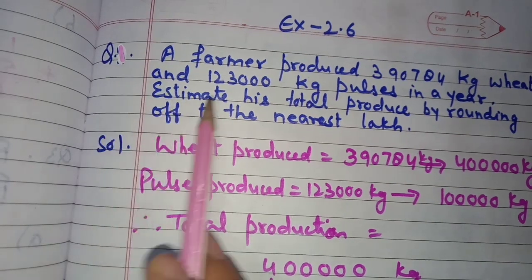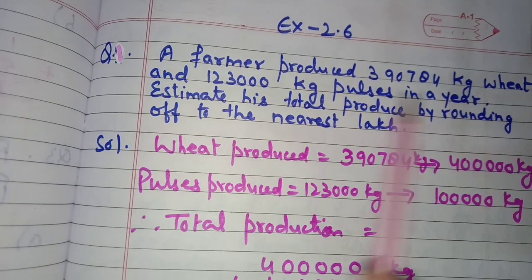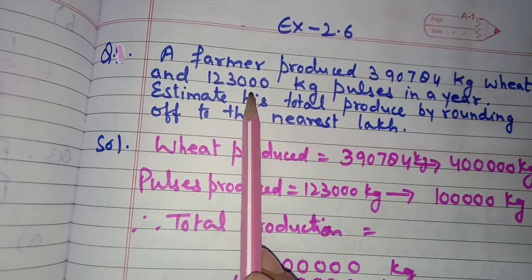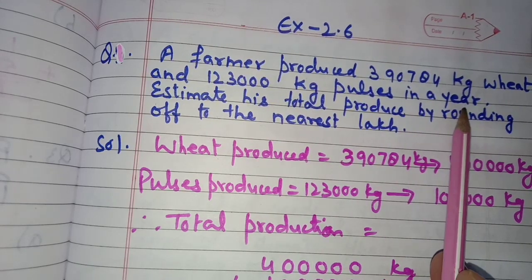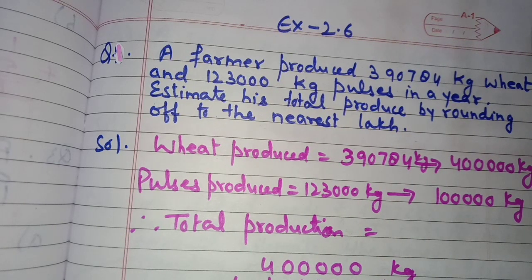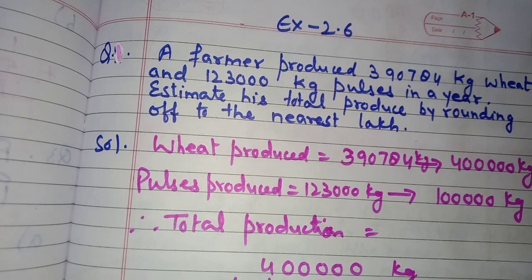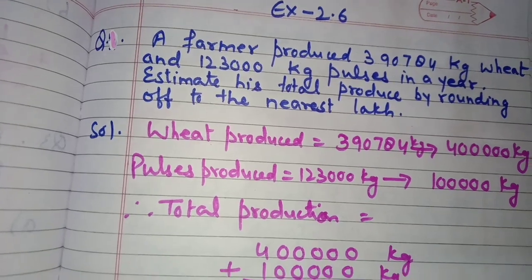Question number 1: A farmer produced 3,90,784 kg wheat and 1,23,000 kg pulses in a year. Estimate his total produce by rounding off to the nearest lakh. The information about wheat and pulses produced by a farmer is given and we need to find the estimated total produce, rounding off to the nearest lakh.